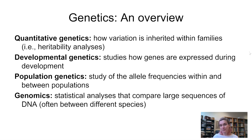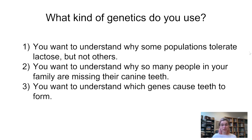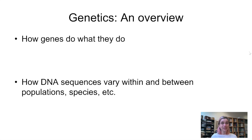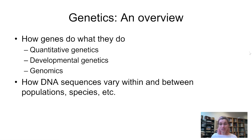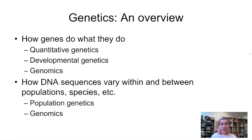Another way to think about genetics is to consider what your question is and then figure out what type of genetics approach is useful to answer it. For example: Why do some populations tolerate lactose but not others? Why are so many people in your family missing their canine teeth? Which genes cause teeth to form in the first place? Different types of genetics approaches provide different kinds of information. If you want to know how DNA sequences vary within and between populations or species, you could use population genetics or genomics.